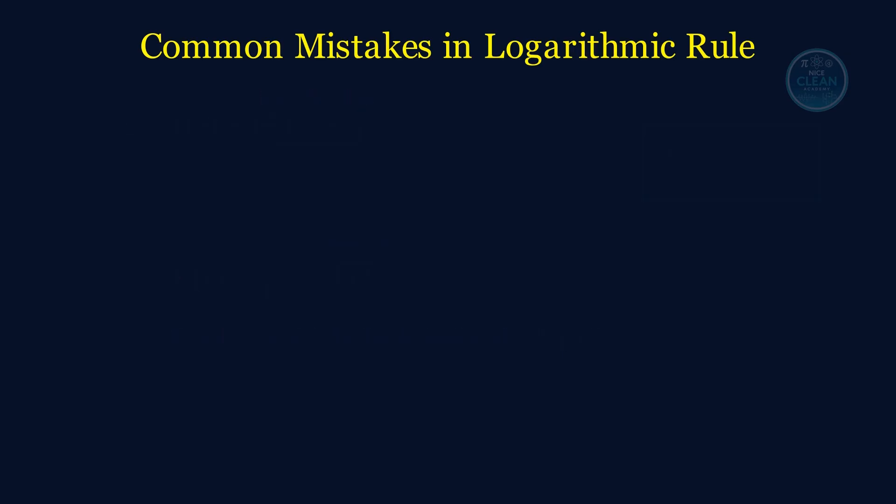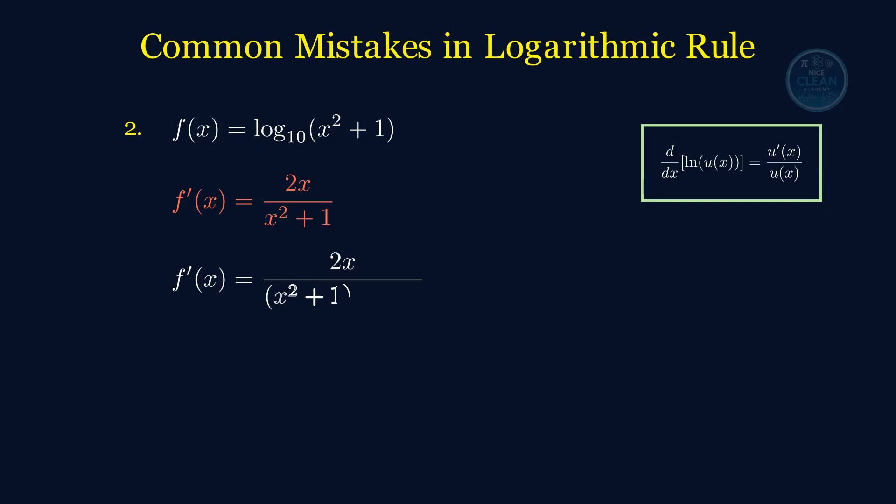Next, log base 10. Let's take f of x equals log base 10 of x squared plus 1. Some students just go, oh, derivative of x squared plus 1 is 2x, and divide by x squared plus 1. But wait, that's only true for ln, not for log base 10. When the base isn't e, we divide by the natural logarithm of the base. So the correct answer is 2x over x squared plus 1 times ln of 10. Don't forget that little ln term. It's the quiet troublemaker.